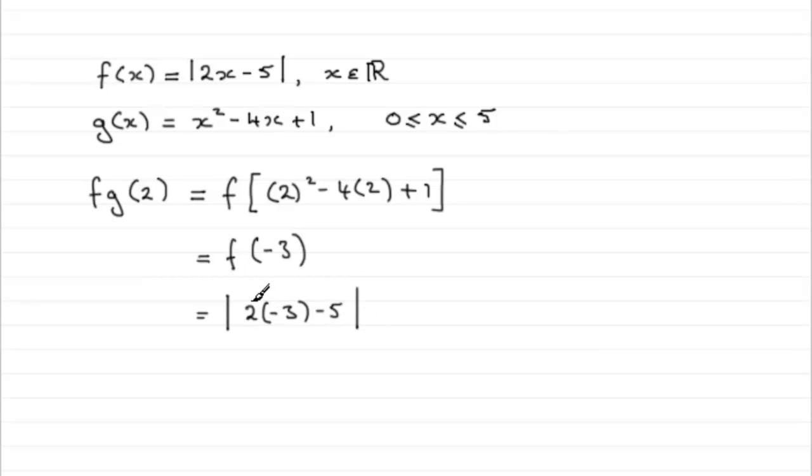And this is going to be minus 6, minus 5. So in other words, the mod of minus 11. But with a mod around a negative value, we just strip off the negative value and return the positive value. So it's going to be 11. There you go. Fg of 2 then equals 11.